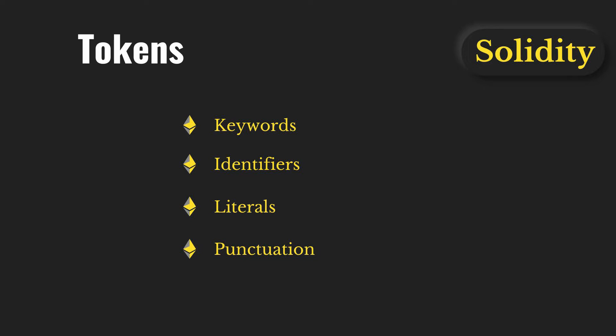The third component is literals — a literal is a data type you define in your smart contract, like number, string, and boolean. These are important interview topics: the interviewer will ask you what a literal is in terms of Solidity programming, what an identifier is, and what a keyword is. The fourth component is punctuation — it represents the symbols used in Solidity. If you've coded in JavaScript, you'll find the same structure: semicolons, brackets, and so on.